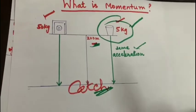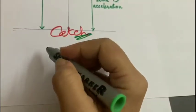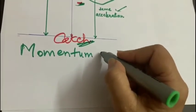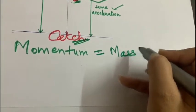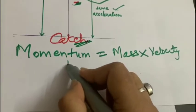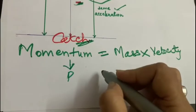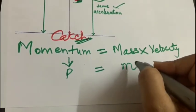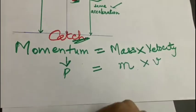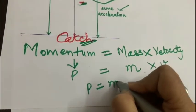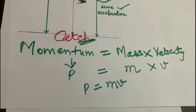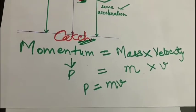So we define momentum as the product of mass and velocity. We denote momentum with the letter P, and mass is denoted by the letter M, and velocity by V. So we get a formula for calculating momentum as P equals M into V.